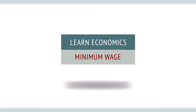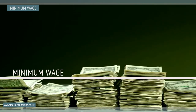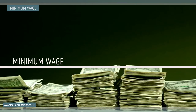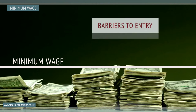A national minimum wage sets the minimum hourly legal wage rate. Its aim is to reduce poverty pay. Low pay can result from a number of labour market failures, including a lack of access to the labour market as a result of barriers to entry, such as discrimination.